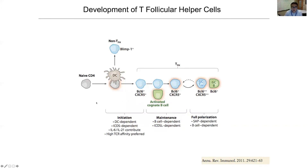TFH cell differentiation is stepwise: a naive cell interacts with a dendritic cell through antigen signals. Given the right conditions — ICOS signaling and cytokines — TFH cells upregulate BCL6, the master transcription factor, and CXCR5 for positioning to the T-B border. An activated cognate B cell then provides additional signals for more BCL6 and CXCR5 expression. The cell then enters the germinal center, further interacting with germinal center B cells, reaching the highest BCL6 and CXCR5 expression in full polarization.